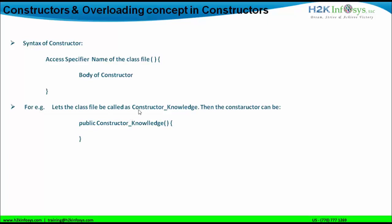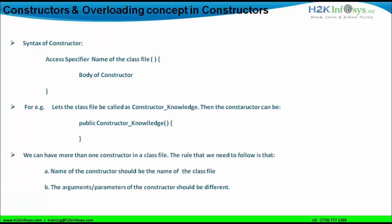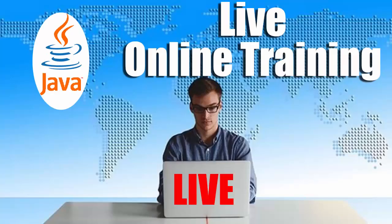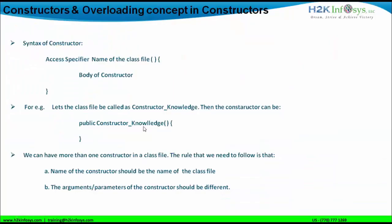For example, if there is a class file called 'constructor_knowledge', this class file can have a constructor as: public — which is the access specifier — followed by the class file name, followed by parentheses, followed by the opening and closing curly brace. This is how a constructor looks. We can have more than one constructor in a class file, but the rule is that they must have different arguments. This particular example is a no-argument constructor because no argument is defined within the parentheses following the constructor name 'constructor_knowledge'.